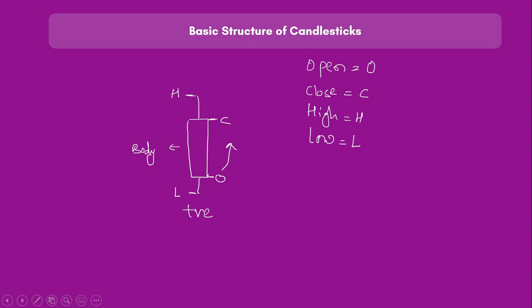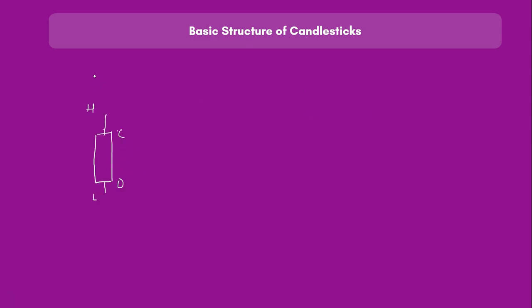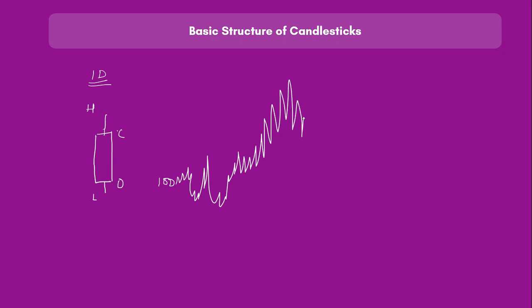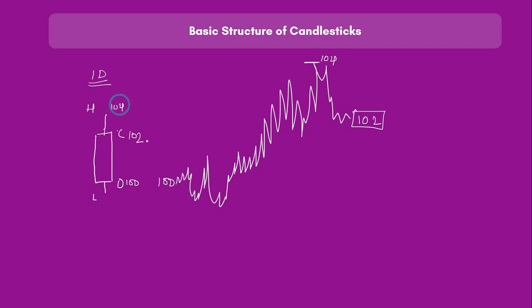For example, say this is a one-day candle representing what happened in the market on a particular day. Open represents the opening price at 9:15 — say the market opened at 100 rupees. It may have fluctuated and then closed at 102. So open is 100, close is 102, the highest price reached is say 104 (the high), and the lowest price reached is say 98 (the low). The entire day's movement is captured in a single candle.